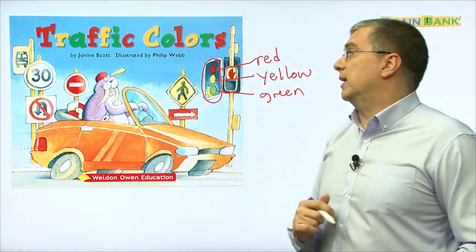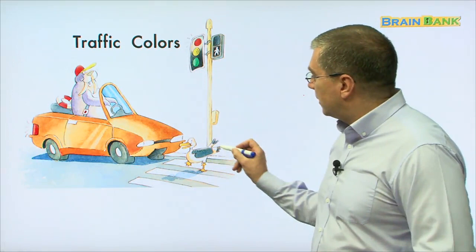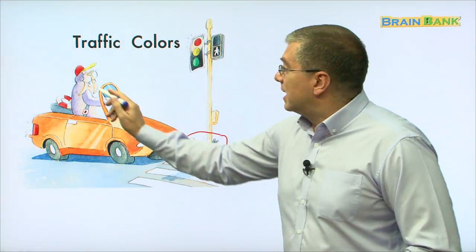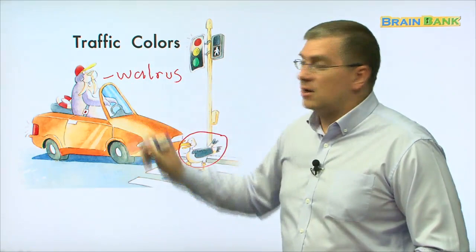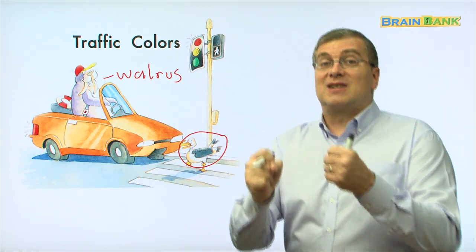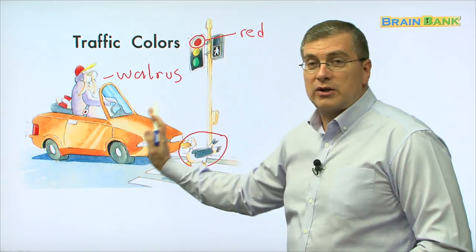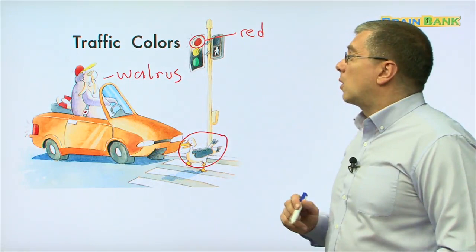Let's read about traffic colors. Here we have an interesting picture. There is a duck crossing the road — a duck is crossing the road. The car is stopped. Here is a walrus — that's the animal. The driver has big teeth; he looks like a walrus. He's stopped because the light is red, so the car stopped and the duck can cross the road.